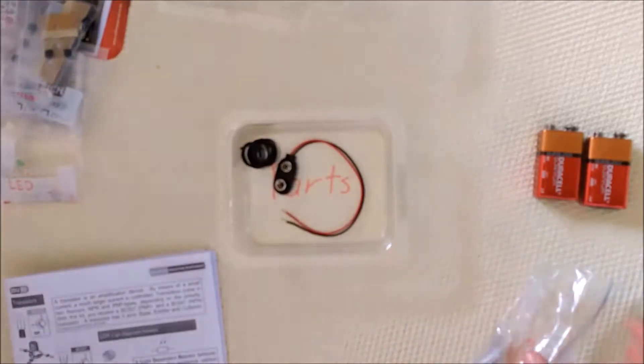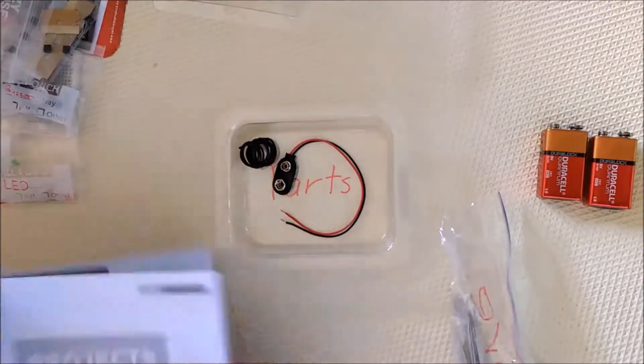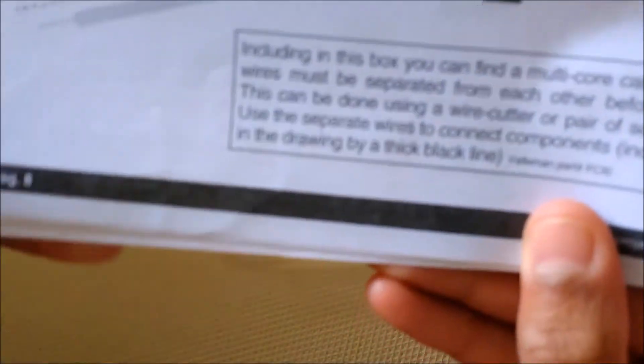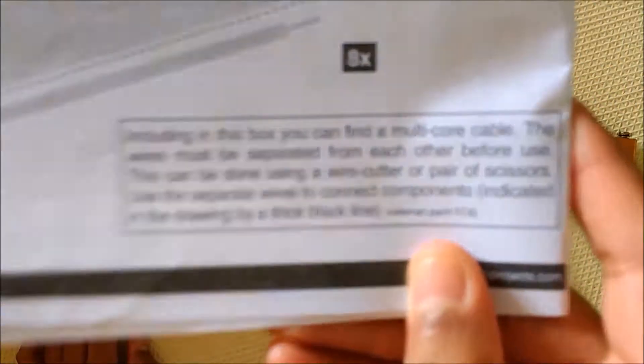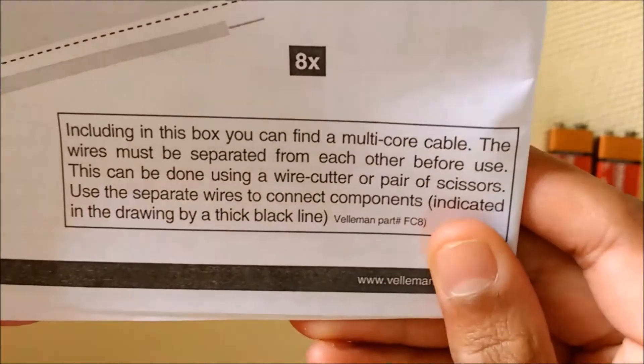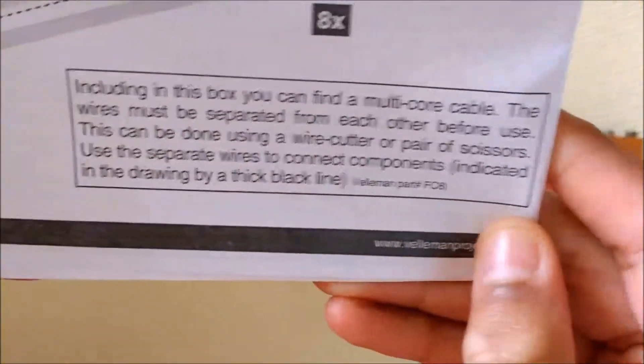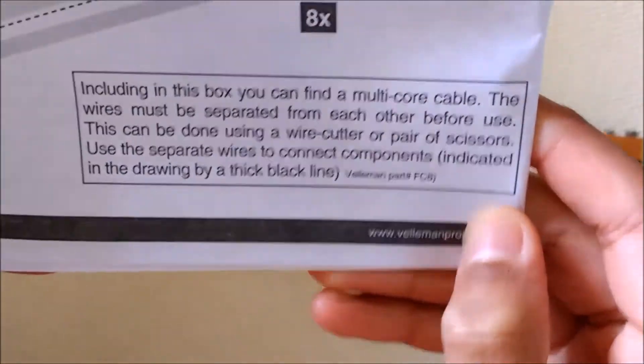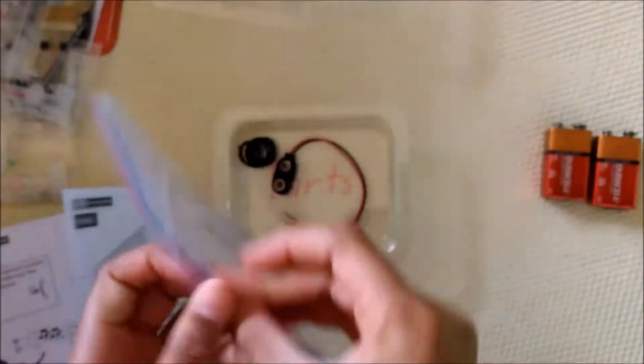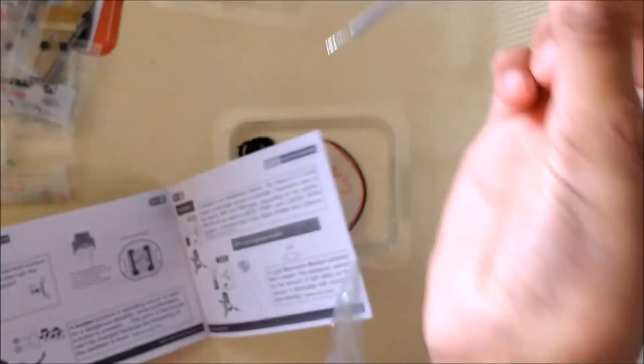There's one more part which is the flat cable. Included in this box you can find a multi-core cable. The wires must be separated from each other before use. This can be done using a wire cutter or a pair of scissors. Use the separate wires to connect components indicated in the drawing by a thick black line. I've cut them all up and put them in this little plastic bag which I've labeled wire.